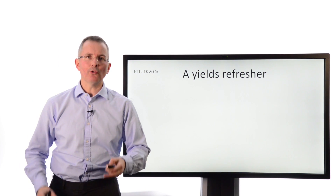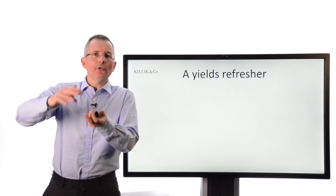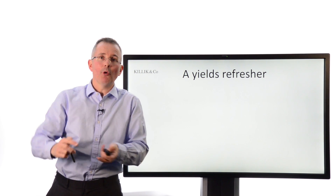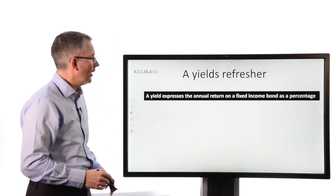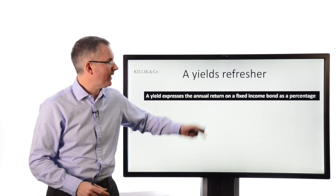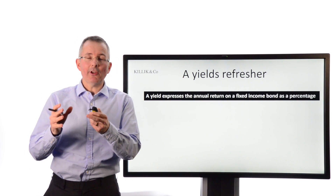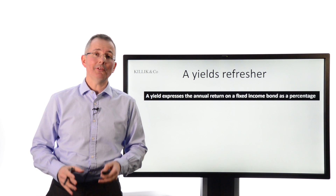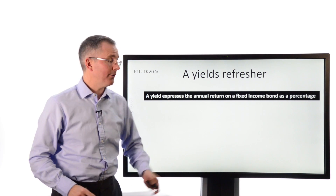For those who are a bit rusty on yields: we're going to take two bonds, compare the yields, and look at the gap between the two. A yield expresses the annual return on a fixed income security or bond as a percentage. At the end of this presentation, I'll give you some videos to watch if you're rusty on this.